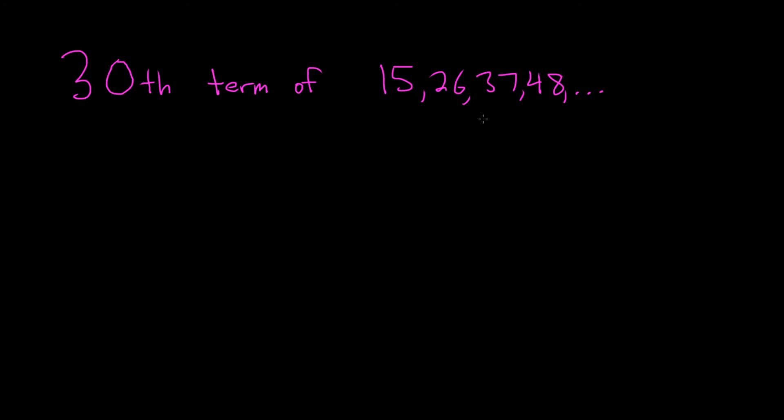Hi everyone. In this problem we have an arithmetic sequence, and we're being asked to find the 30th term. So an arithmetic sequence is one in which each term, except the first term, is obtained by adding a number over and over again.